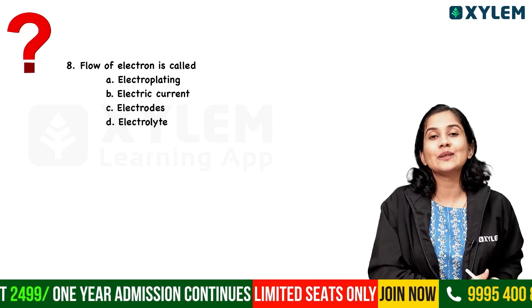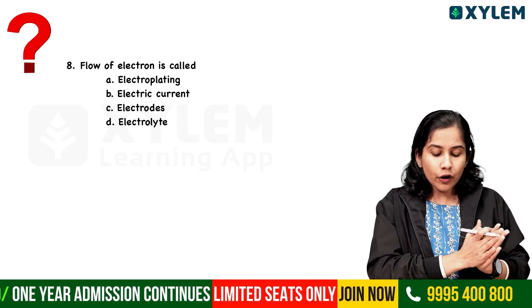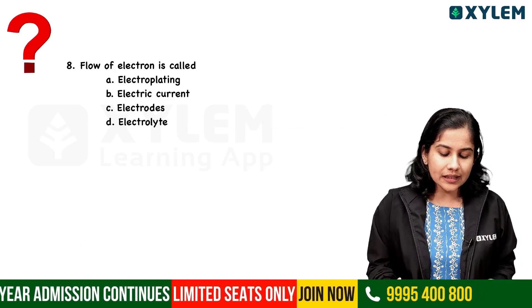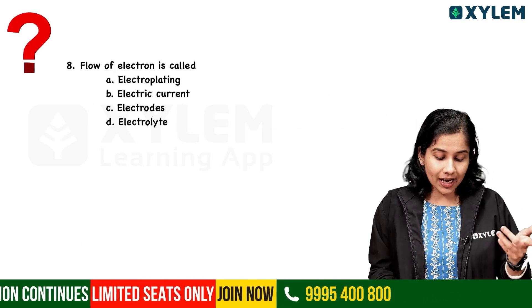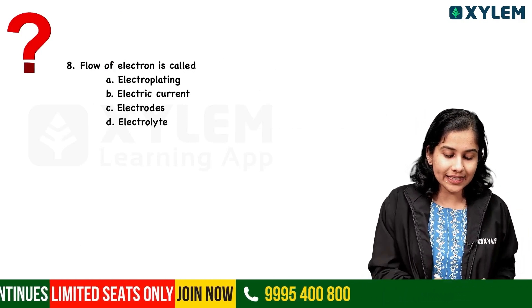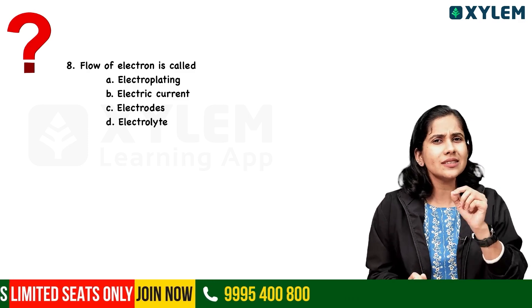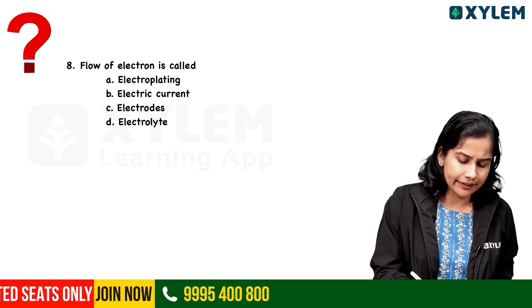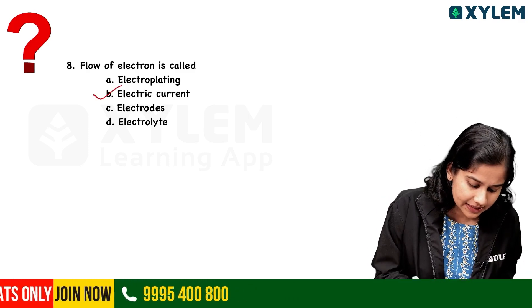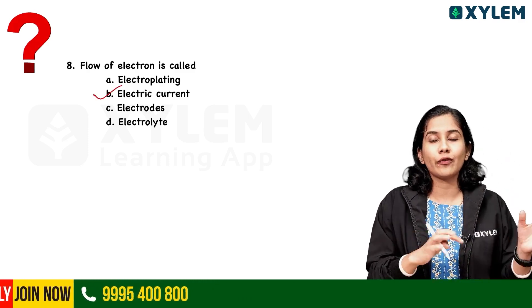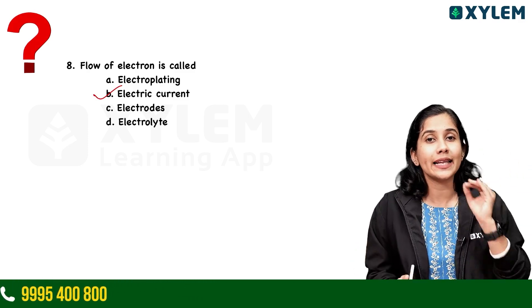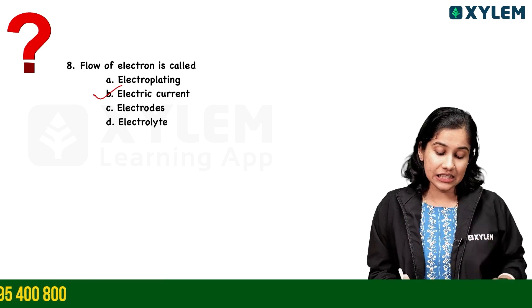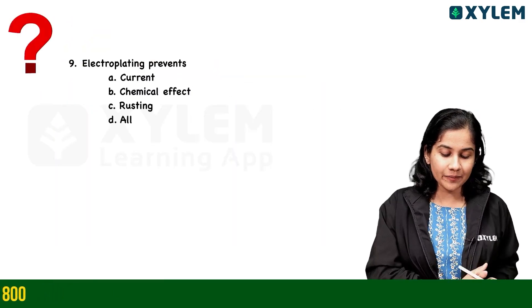Eighth question: Flow of electrons is called — electroplating, electric current, electrodes, or electrolytes? This is a simple question. Flow of electrons is electric current. So the answer is electric current.